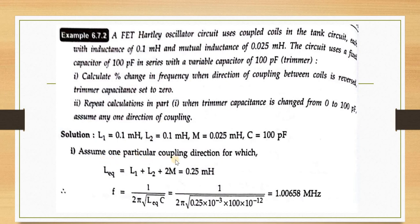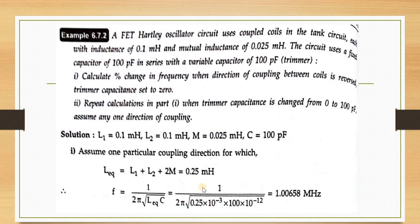Assume one coupling direction: L_eq = L1+L2+2M = 0.1+0.1+2(0.025) = 0.25 mH. With C = 100 pF, substituting into the frequency formula gives F = 1.00658 MHz. For the reversed coupling direction: L_eq = L1+L2−2M = 0.15 mH, giving F' = 1.29994 MHz.